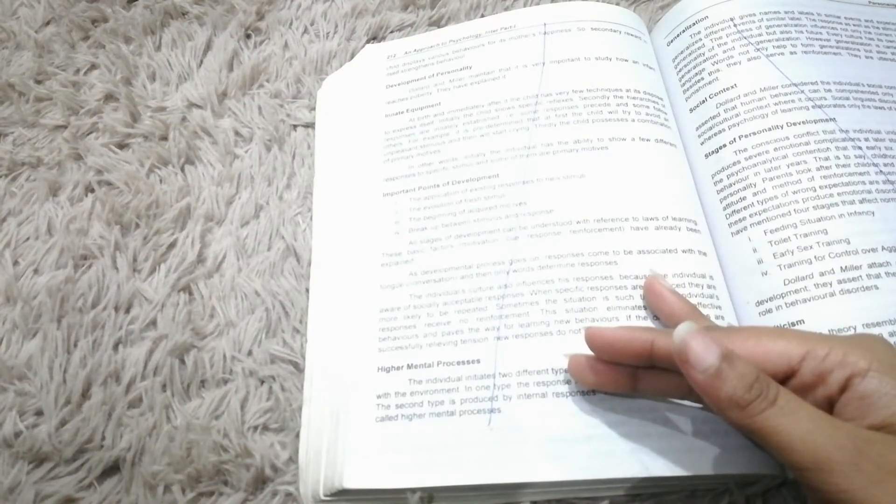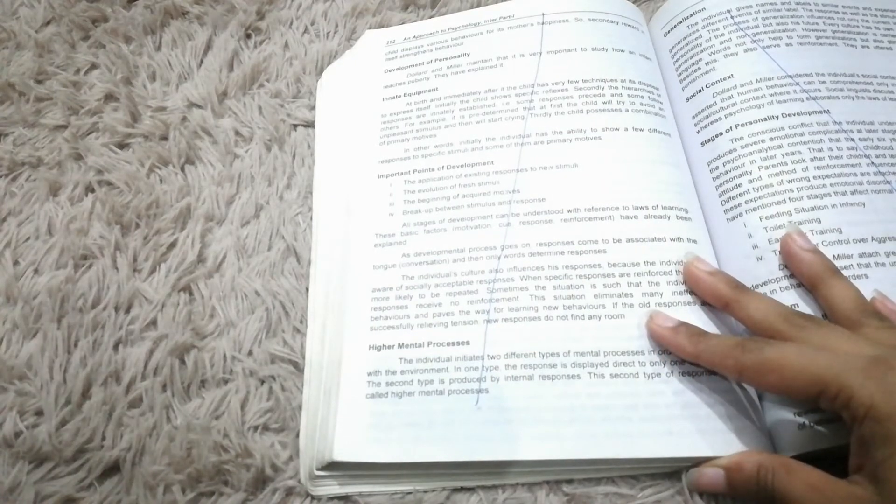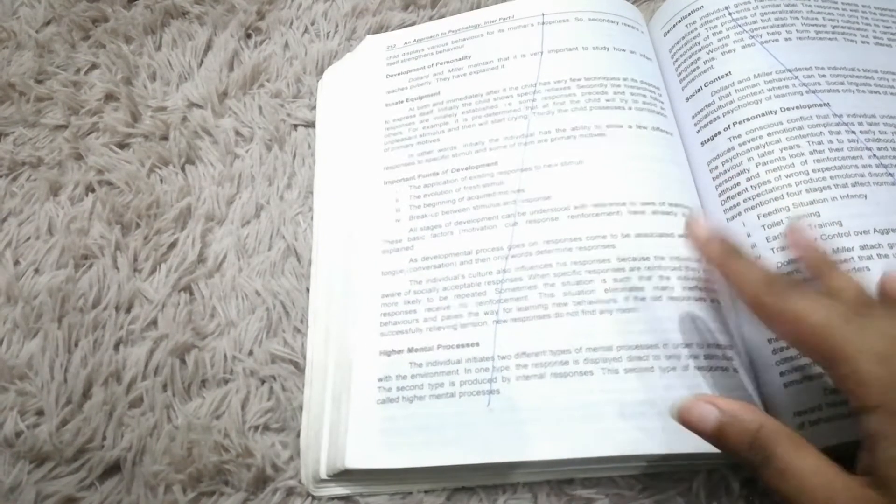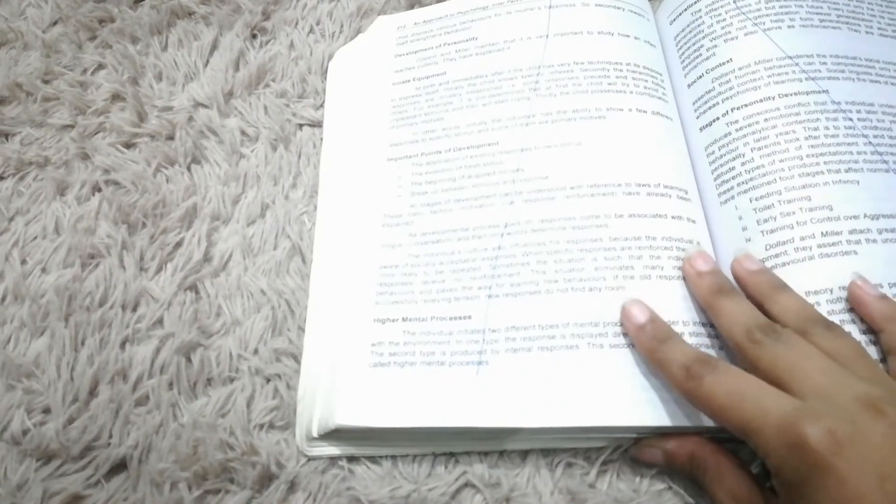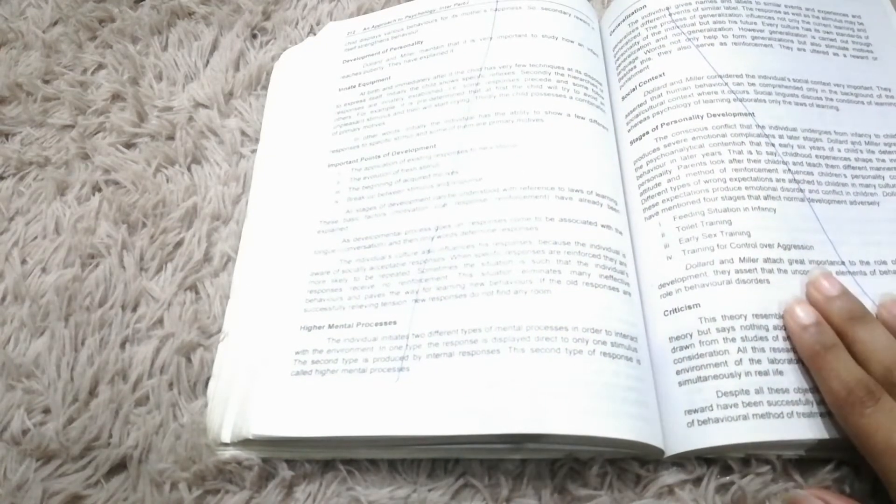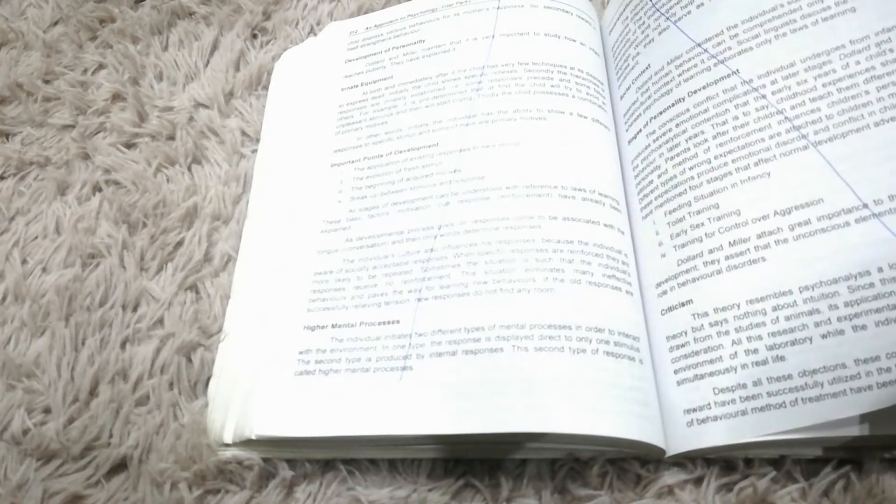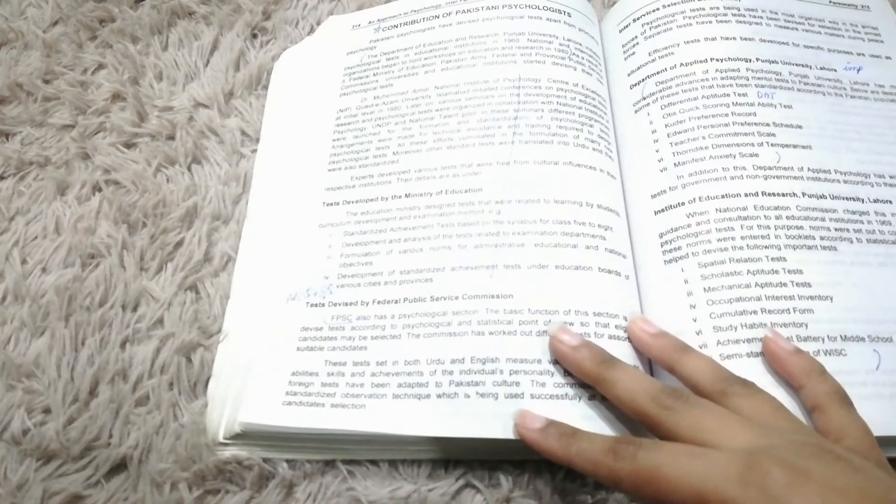Important points. Development - important, not important. Higher mental processes. Generalization. Social contract. Stages of personality development. Criticism - no no. Contribution.